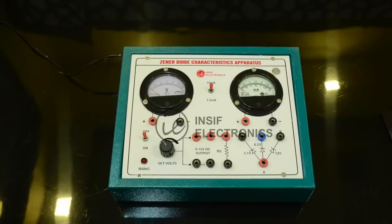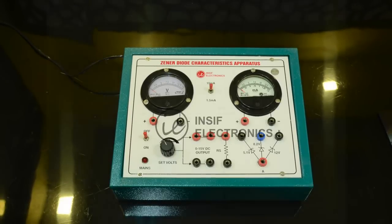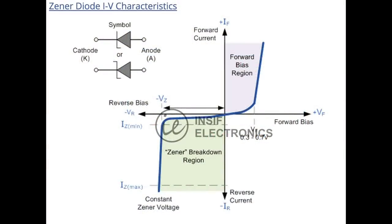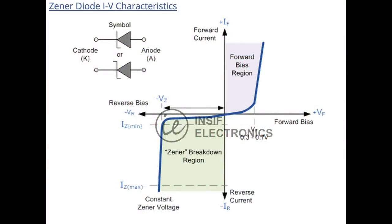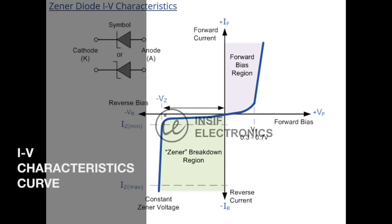The Zener diode behaves like a common semiconductor diode when it is in forward biased condition. The Zener diode will be analyzed not as an ideal diode, but as a real one.